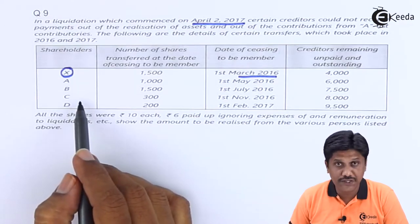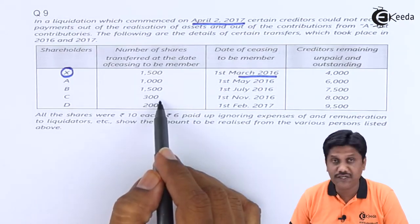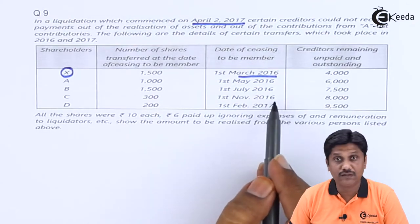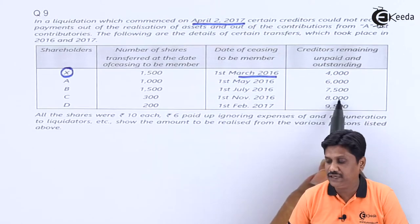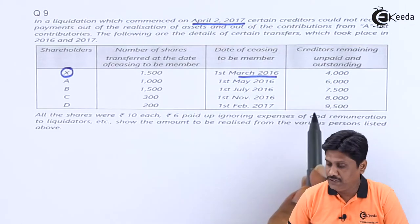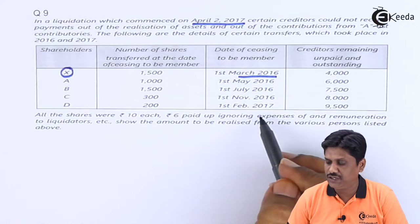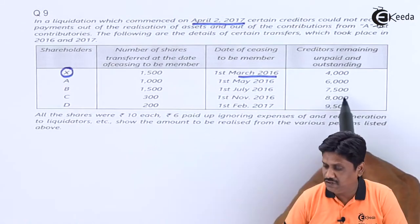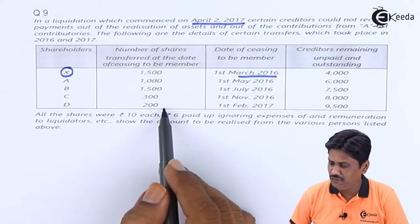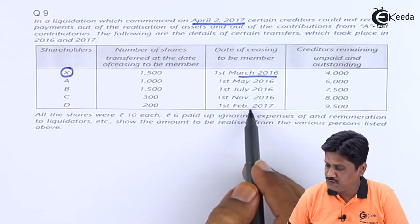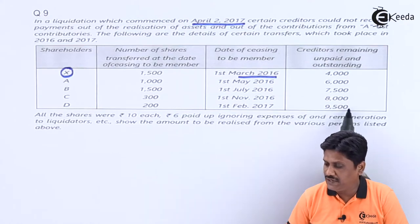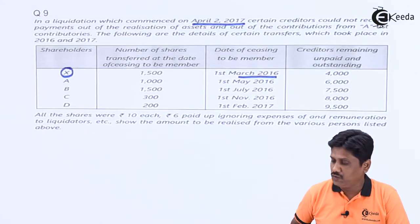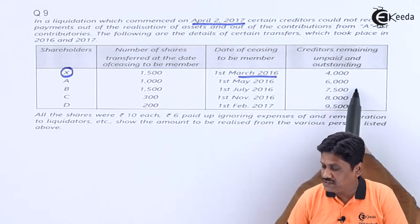C, another shareholder, transferred 300 shares on 1st November 2016, so he is liable to pay the amount outstanding on that date: Rs. 8,000. But A and B will not share this additional liability — they already transferred their shares. Similarly, D transferred 200 shares on 1st February 2017, and at that time the aggregate liability had become Rs. 9,500. The liability was continuously increasing.